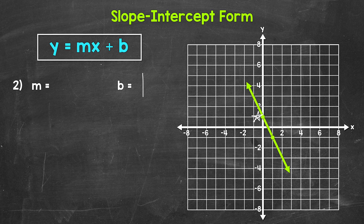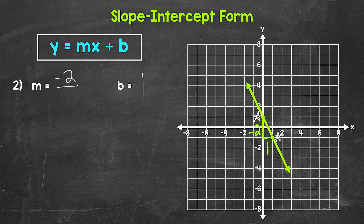Now let's use another point on the line to figure out the slope. We'll work from the left point to the right. Starting with the rise, we need to go down two units to align with the other point — and since we went down, this is a negative 2. Our rise is negative 2. Then we need to go over one unit to the right to get to our other point, so our run is positive 1. Our slope is rise of negative 2 over run of 1, which simplifies to just negative 2.